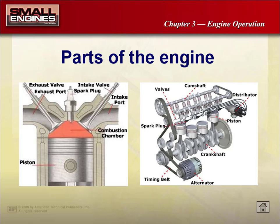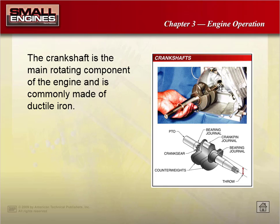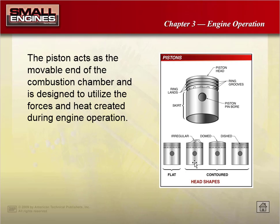The crankshaft connects to our pistons and spins around inside the engine. It has journals — metal journals that need to be lubricated to slide freely. It also has counterweights so that while the crankshaft is spinning — possibly at a thousand rotations per minute — it doesn't wobble. Think of it like spinning in a circle: without counterweights, you'd drift. These counterweights keep the shaft centered.